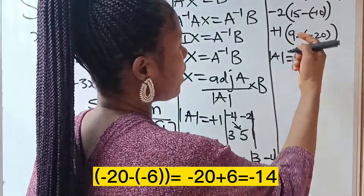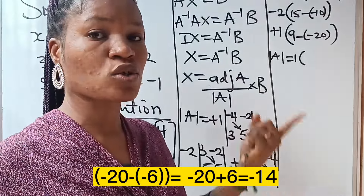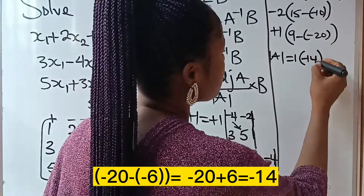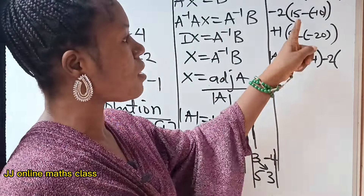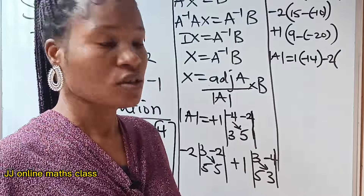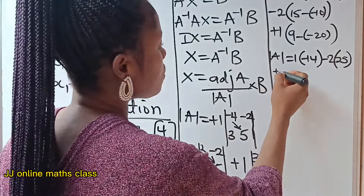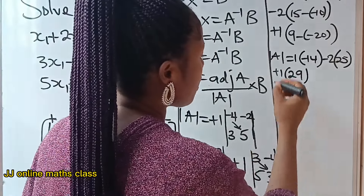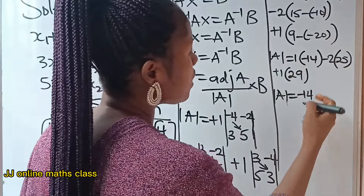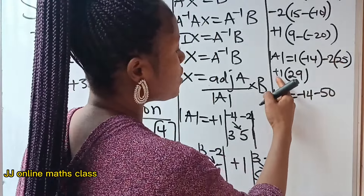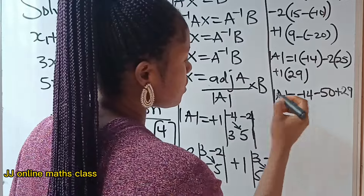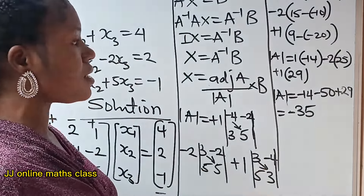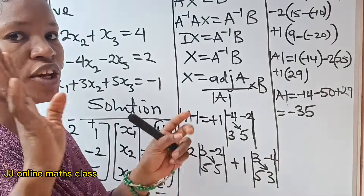Evaluating each bracket: minus four times five is minus twenty, minus minus six becomes plus six, giving minus fourteen. For the second bracket: fifteen minus minus ten becomes fifteen plus ten, giving twenty-five. For the third bracket: nine minus minus twenty becomes nine plus twenty, giving twenty-nine. So the determinant equals one times minus fourteen, minus two times twenty-five, plus one times twenty-nine, which is minus fourteen minus fifty plus twenty-nine, giving minus thirty-five.